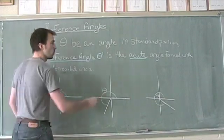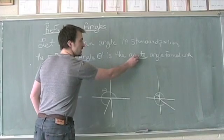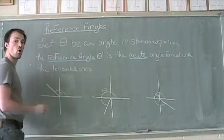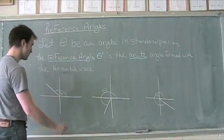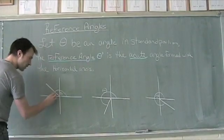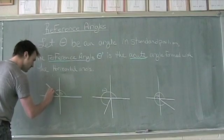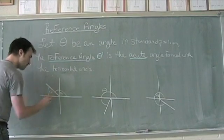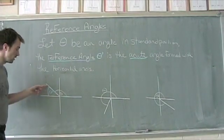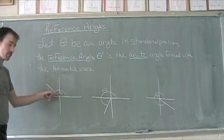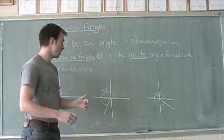Now, again, what we're always going to be wanting to look for is the acute angle formed with that horizontal axes. So here's the horizontal. The only angle that's going to be acute is this angle here, this theta prime. The other angle is not acute, and in fact, it's also theta itself.